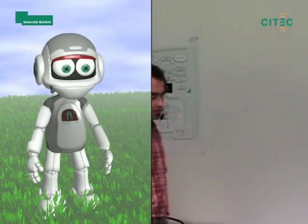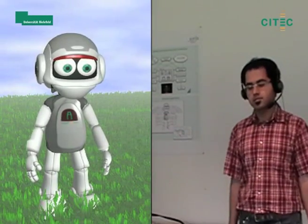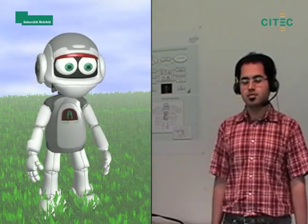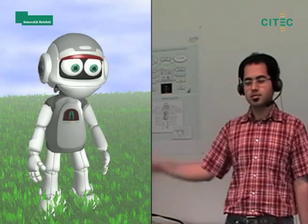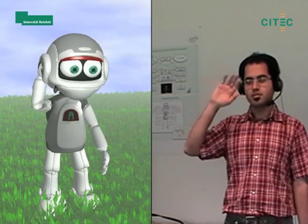In the following, we show a live interaction between our agent Vince and a human user. Here, Vince recognizes a waving gesture and understands it as the start of an interaction.